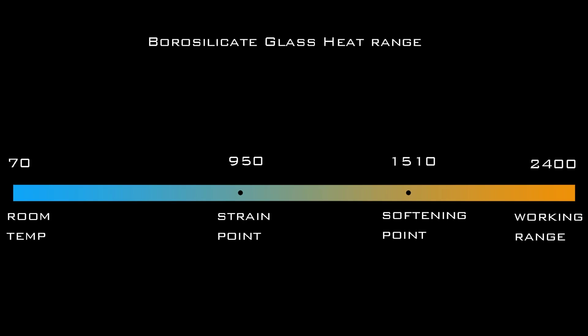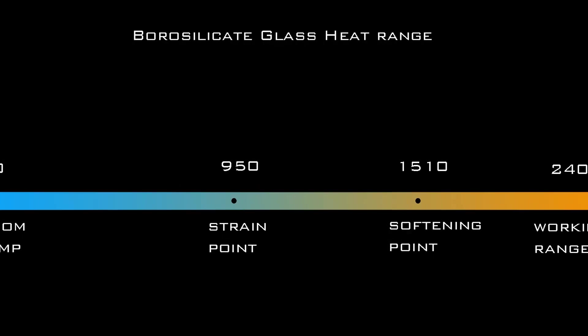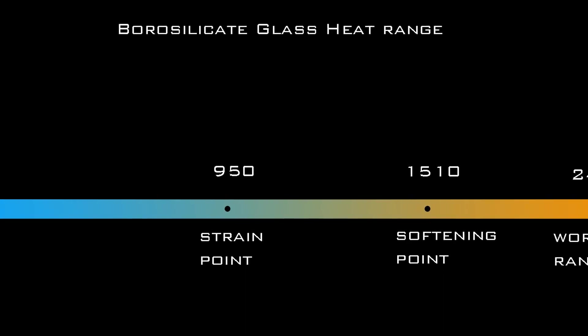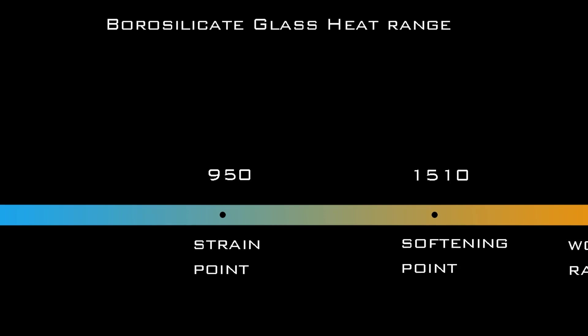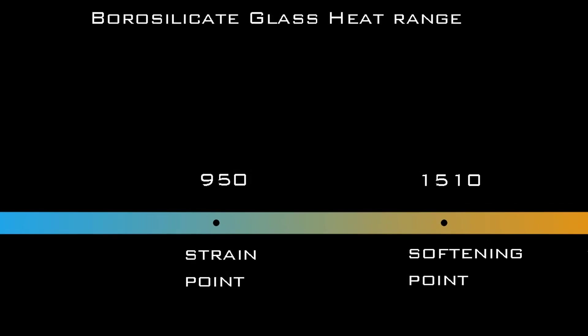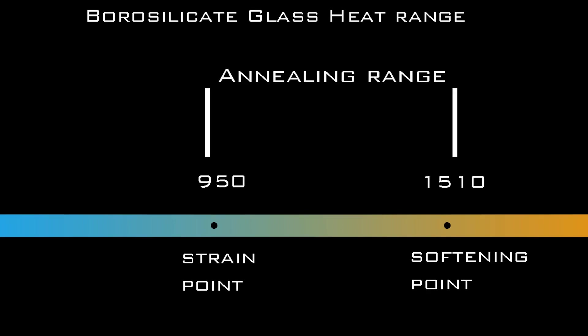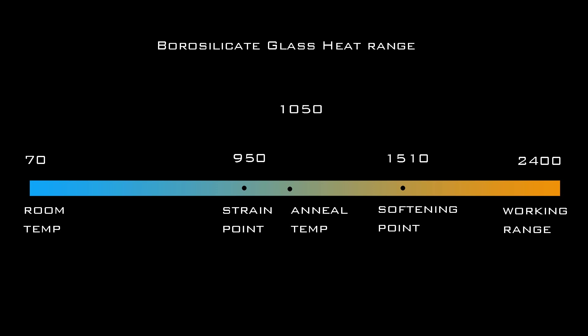Between 950 and 1510 degrees Fahrenheit, the glass is in a state that is partly elastic and partly plastic. The closer to the strain point it is, the more elastic it is. The closer to the softening point it is, the more plastic it is. I sometimes refer to this range as the annealing range because the glass will anneal at any temperature in that range. At 951 degrees the glass will take an impractical amount of time to anneal, and at 1509 degrees there is a significant danger of the glass deforming under its own weight. So a compromise temperature of 1050 degrees Fahrenheit is said to be the ideal annealing temperature, because the chance of deformation is minimal and the time required to anneal is acceptable. But this is not an absolute — there may well be situations where a lower or higher annealing temperature is called for.